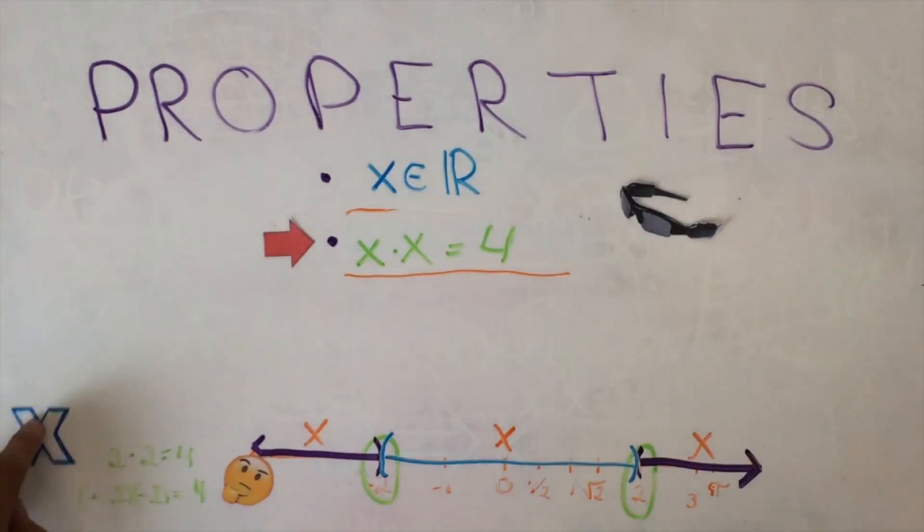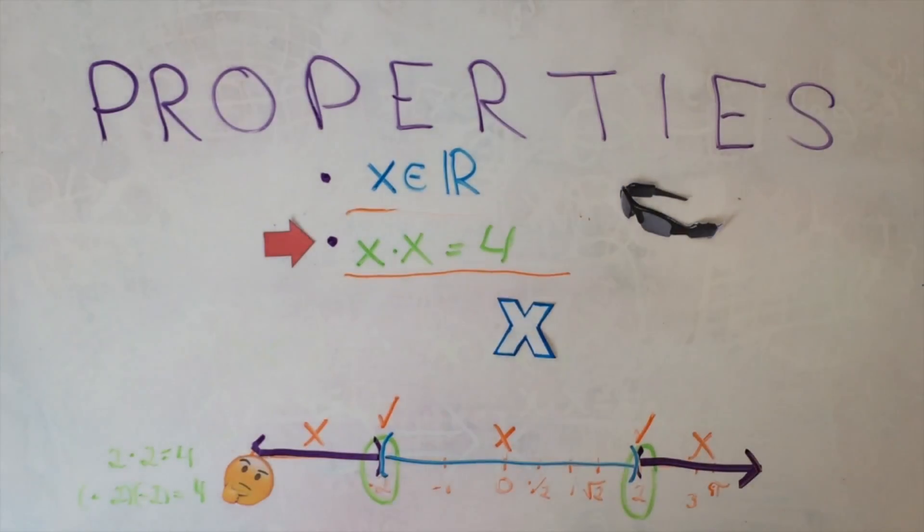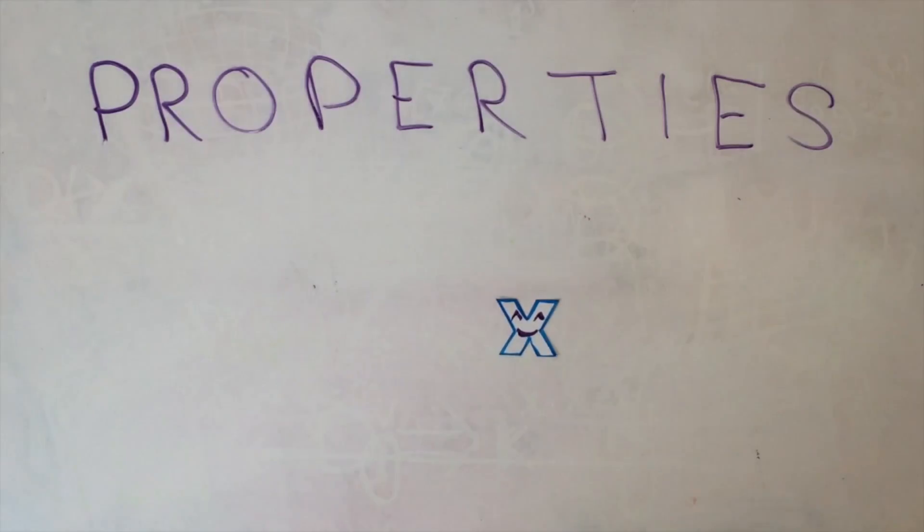Therefore, either X is 2 or X is minus 2, and X cannot be any other real number. Wonderful, don't you think?